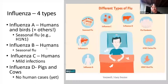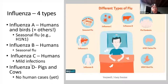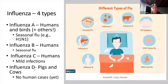Influenza B pretty much only infects humans and is also associated with the seasonal flu, though to a much lower extent — it can be associated with seasonal flu pandemics. Influenza C only infects humans and has really super mild infections; it's not even really an epidemic or pandemic in humans. Influenza D is a relatively new influenza described since 2015; to date, there've been no human cases — they found it in pigs and cows, but no human cases. So four main types of influenza.